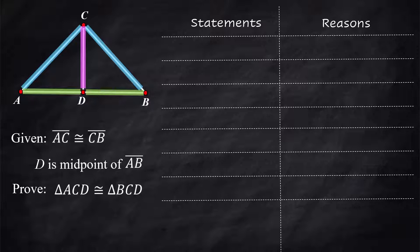So what we have here is no information about angles but we do have enough information to prove that all three sides of these two triangles are congruent so we'll be able to prove that using the side side side theorem.